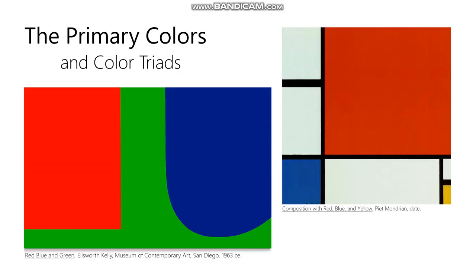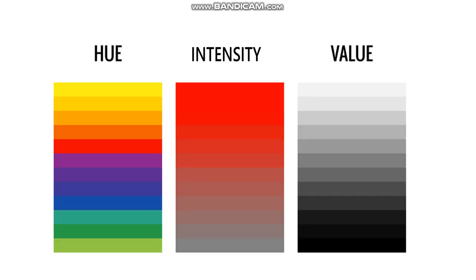Here are some works of art that are using primary color triads. In the case of the Ellsworth Kelly, this is very close to the primary colors of projected light — the additive system. And in the Mondrian, it's pretty much spot on for the primary colors of the traditional subtractive system.